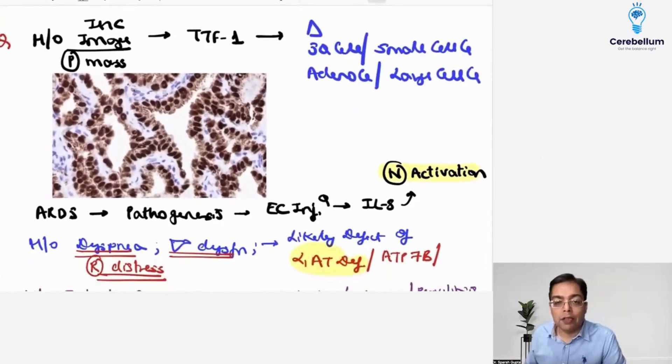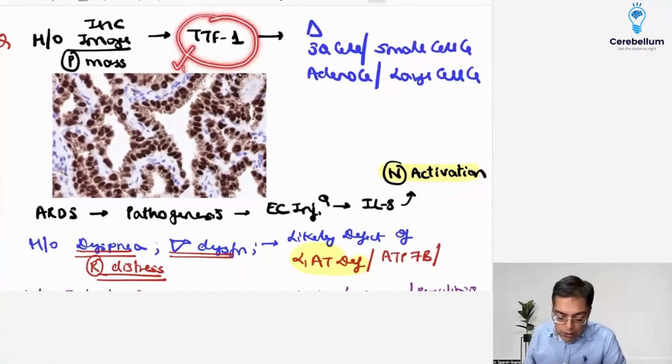One question was regarding the expression of a factor, thyroid transcription factor 1. The patient had the presence of a lung mass and the presence of an IHC marker which had positivity for TTF1, thyroid transcription factor 1.